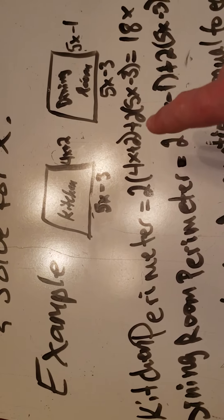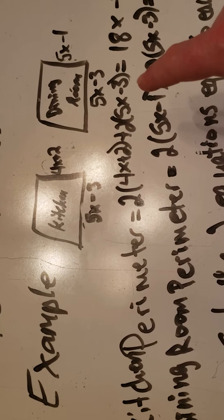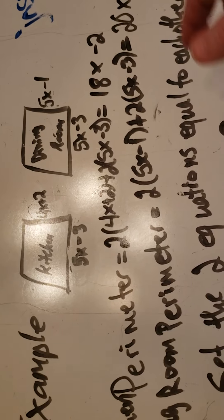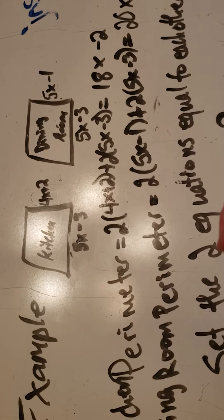So we get 2 times 4x plus 2 plus 2 times 5x minus 3, which all simplified becomes 18x minus 2. If you're unsure how to do that, watch the video from yesterday.